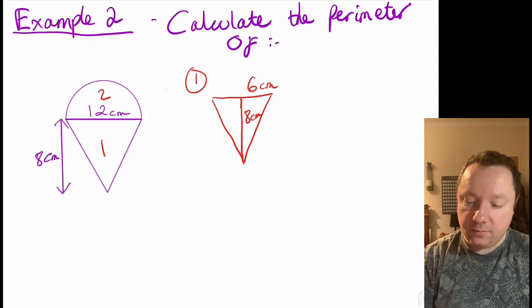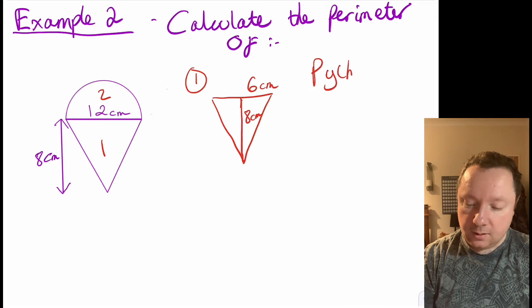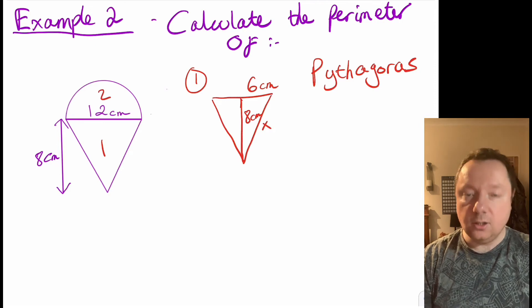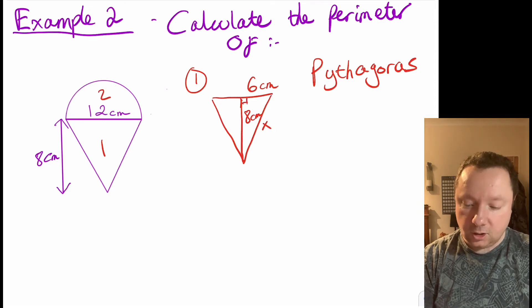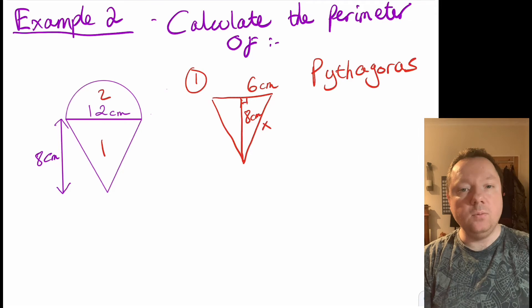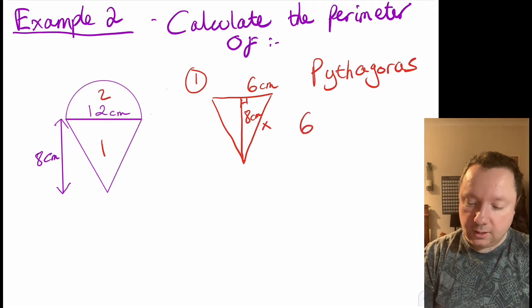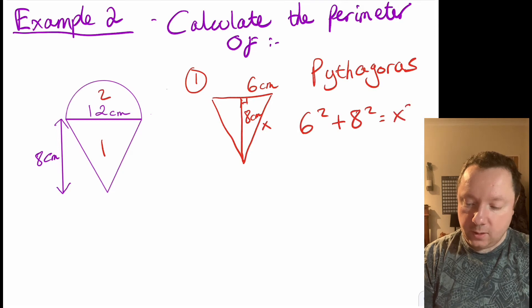So by Pythagoras, I can work out this missing side here which I'll call x. Just a quick reminder of Pythagoras: you square both sides and add them together to give you the square of the other side. So we've got 6 squared plus 8 squared equals x squared.